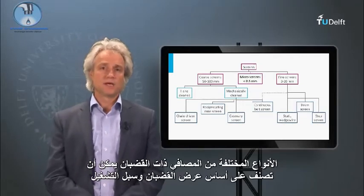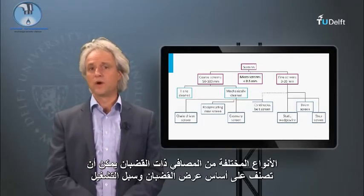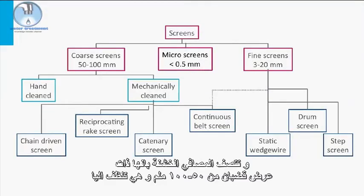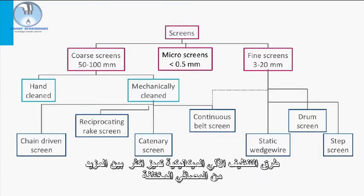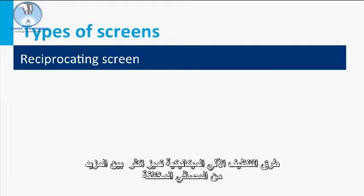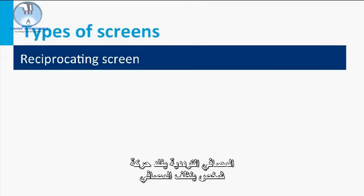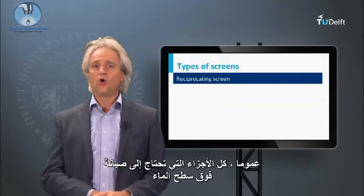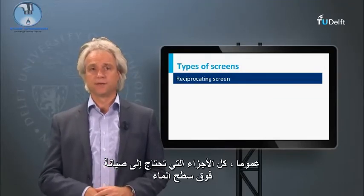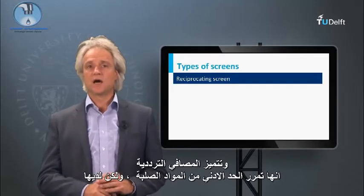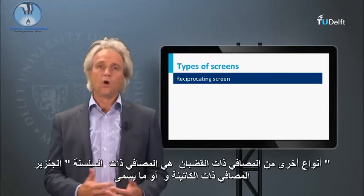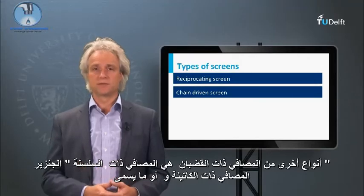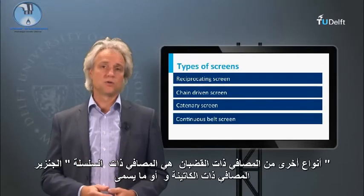The different types of bar screens can be classified based on bar width and ways of operation. The coarse screens are characterized by a bar width of 50 to 100 mm and are automatically or manually cleaned. The reciprocating screen imitates the movement of a person raking a screen. Generally, all parts that require maintenance are above the waterline. The reciprocating screens are characterized by minimal solids carryover, but they have a limited capacity to handle large or heavy solids. Other bar screen types are the chain-driven screens, the catenary screens, or the so-called continuous belt screens.